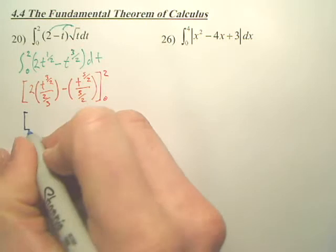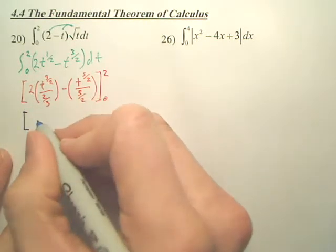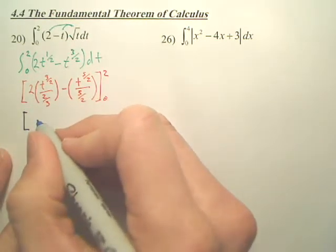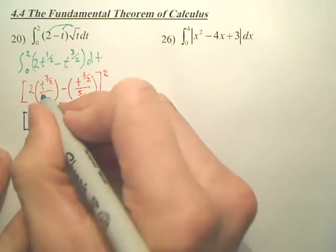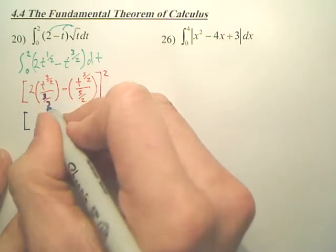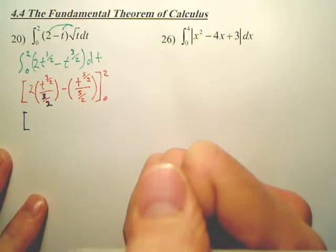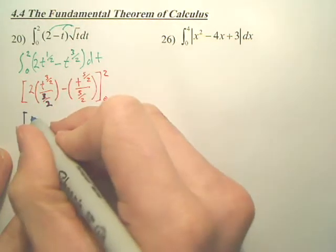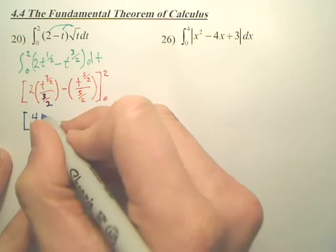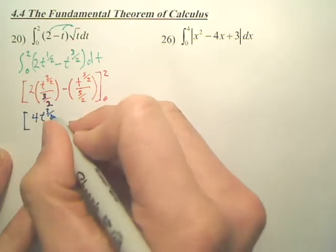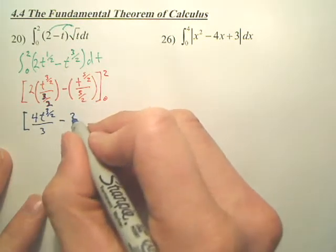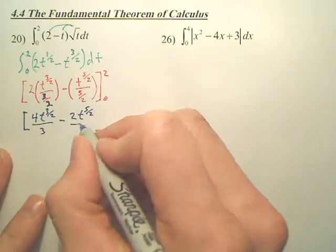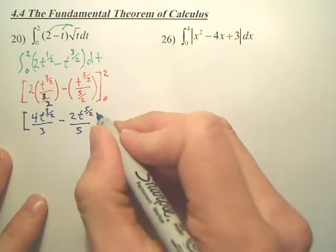Could I actually simplify this? Isn't that going to be t over three? Actually, it's three over two. Yeah, that's a three over two, correct? Which makes this four t to the three over two over three, minus two t to the five over two over five.